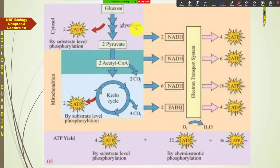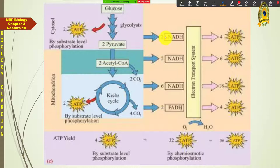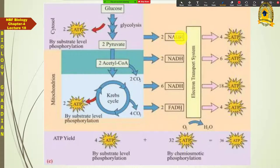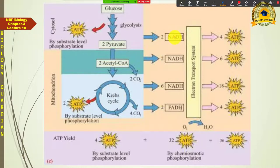Also, 2 NADH₂ molecules are released from glycolysis, and these are produced in the cytosol. Their oxidation must occur in the respiratory electron transport chain. In prokaryotes, these 2 NADH₂ molecules can directly reach the cell membrane and get oxidized, yielding 6 ATPs total (3 ATPs per NADH₂). But in eukaryotic cells, these NADH₂ molecules must enter the mitochondria.